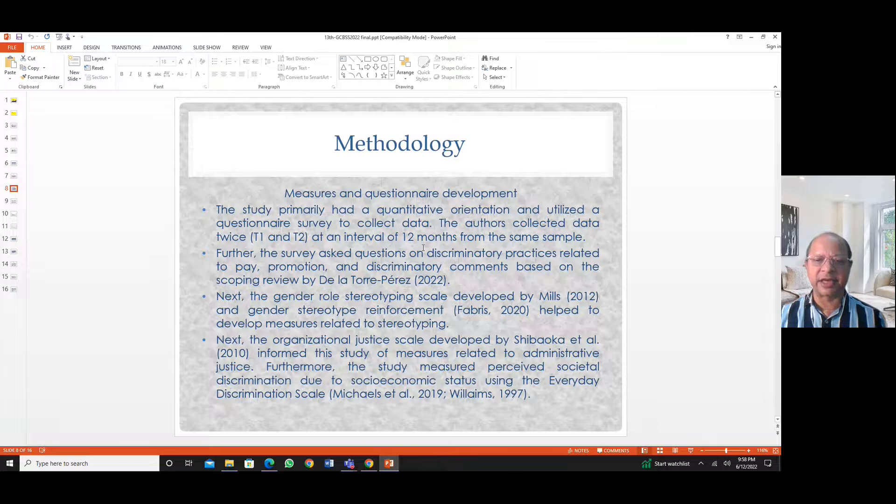The authors collected data at time one and at time two at an interval of 12 months from the same sample. Further, the survey questions asked on discriminatory practices related to pay, promotion, and discriminatory comments based on scoping review by Delatole and Perez, who did a similar study. The gender stereotyping role was adapted from the scale developed by Mills and by Fabris, which helped to develop measures related to stereotyping.